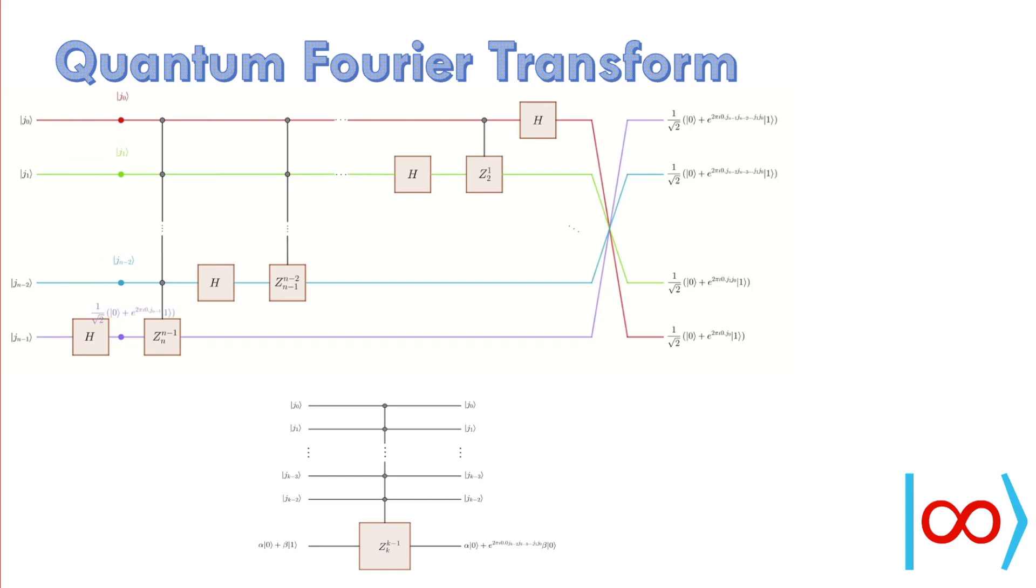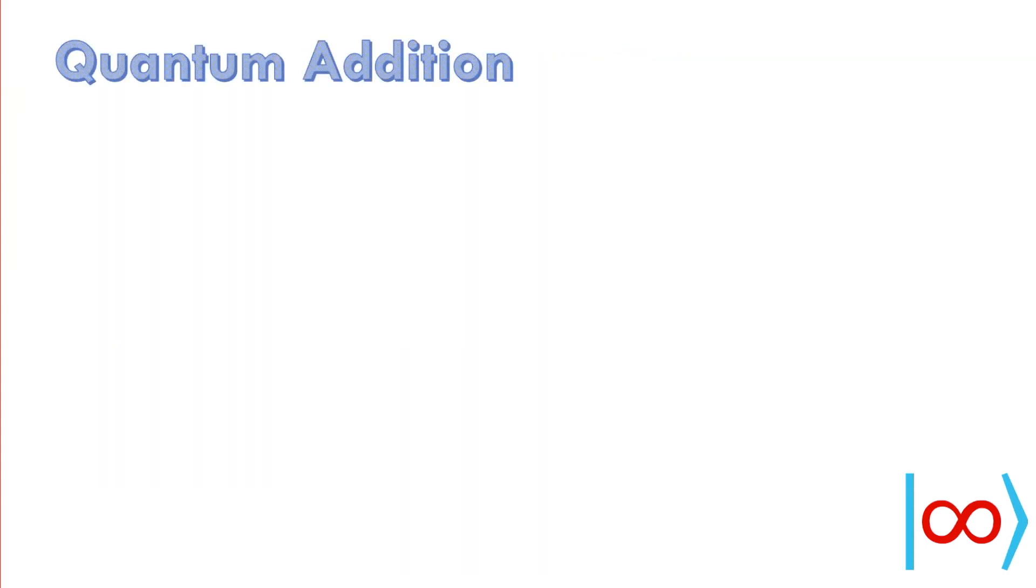The idea in using quantum Fourier transform for addition is to start with the first number a and apply quantum Fourier transform to it. Then modify the resulting state in some way such that we get quantum Fourier transform of a plus b. Finally applying inverse Fourier transform gives back the required sum.